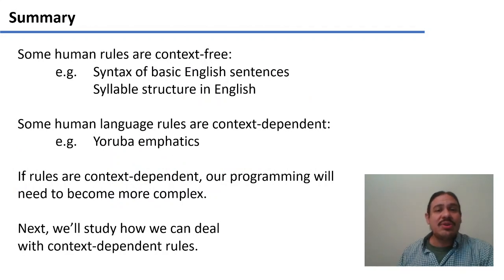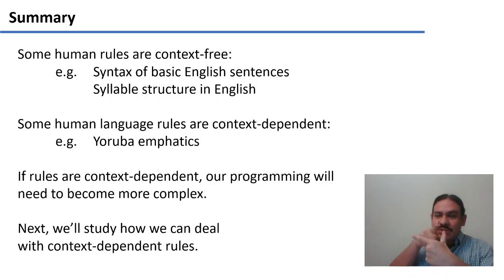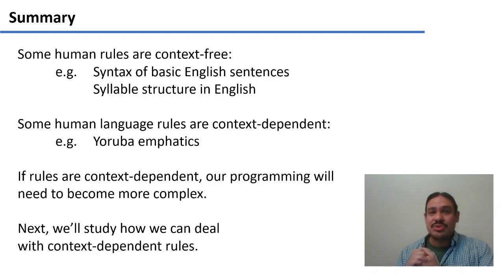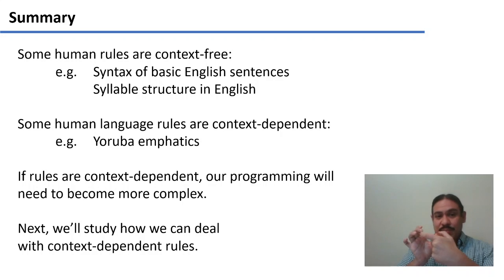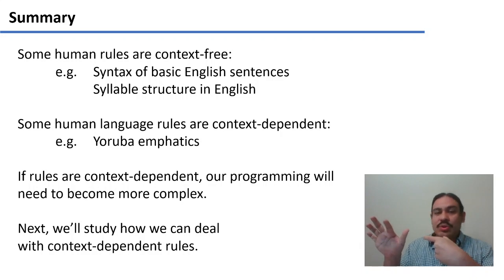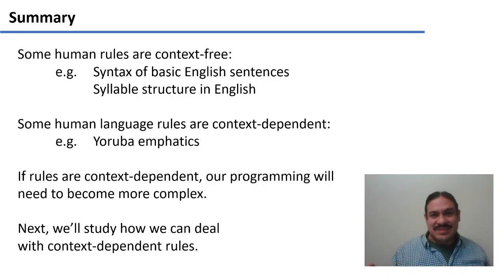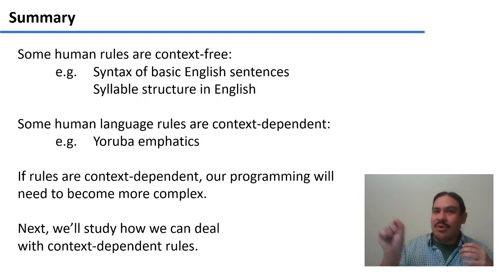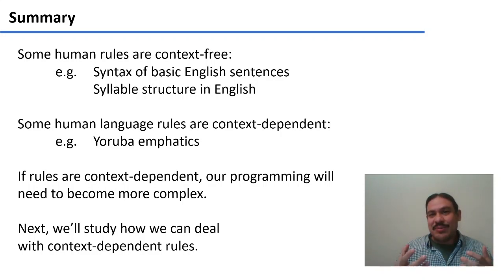In summary, some rules are context-free — for example, basic English sentences and the syllable structure of English — meaning you can generate the structure with its internal knowledge without looking at other syllables or sentences. But some language rules are context-dependent, as with Yoruba emphatics: you have a sequence of sounds as input, and you need to figure out what the preceding and following sounds were in order to determine the correct output. This makes our code more complicated — we need to go back and store things in memory. Next, we'll study how this affects programming and formalize all of this with the Chomsky hierarchy.